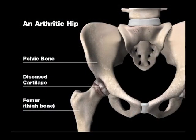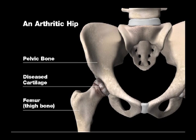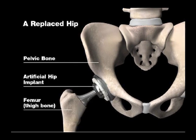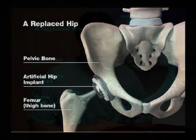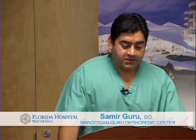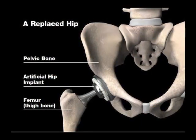Just like knee arthritis, there is hip arthritis, and when you have a worn out hip, you have severe debilitating pain in the groin — you can't walk — and it's time to consider a hip replacement. Obviously we try all the conservative measures before we jump to offering you a total hip replacement: anti-inflammatories, physical therapy. The hip replacement surgery itself takes about 45 minutes to an hour, and you're in the hospital for about three to five days.